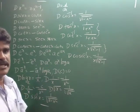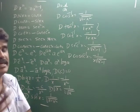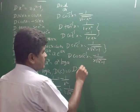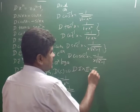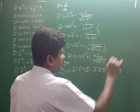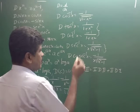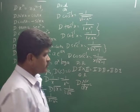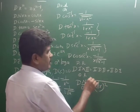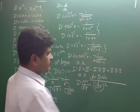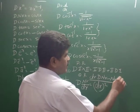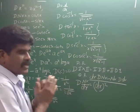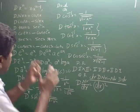Now let's see how the problems are formed. The product rule: derivative of first into second is equal to first into derivative of second, plus second into derivative of first. The quotient rule: derivative of numerator by denominator is equal to denominator squared upon denominator into derivative of numerator minus numerator into derivative of denominator.